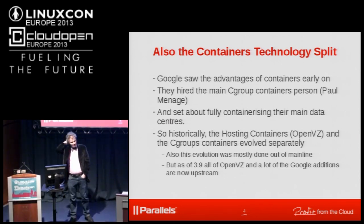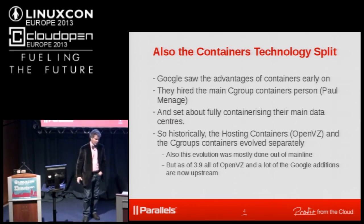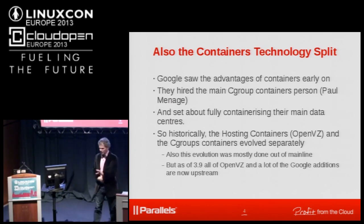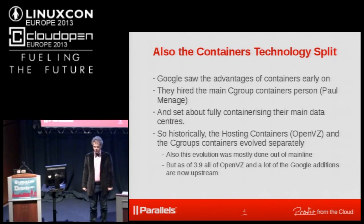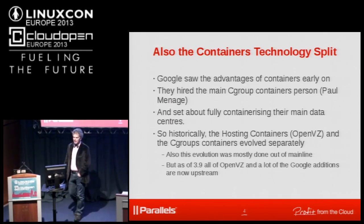We had the benefit of hindsight from the 2005 kernel fork disaster, so three years ago at the kernel summit in Prague, we all sat down and agreed on what we'd do with containers technology. We did a show-and-tell swap: we abandoned bean counters and used Cgroups, and Google wanted pieces of our technology. The result is that OpenVZ and Google kernel container technologies are now almost identical at core. As of kernel 3.9, it's pretty much all upstream.